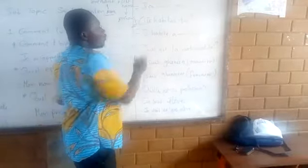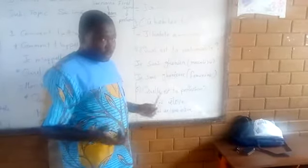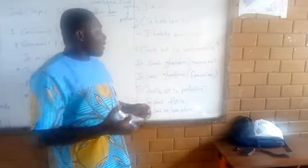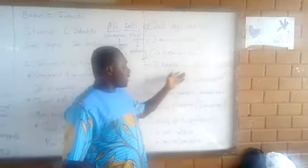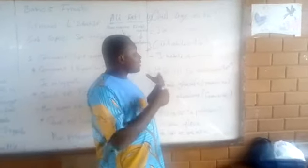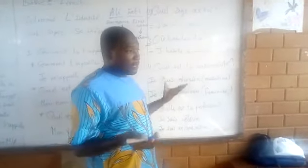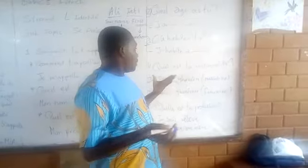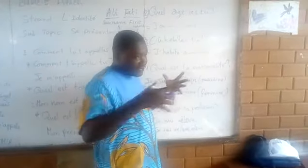Number 3: 'Où habites-tu?' — 'Où habites-tu?' The answer is 'J'habite à' followed by the place. We are learning a little bit about where you live.